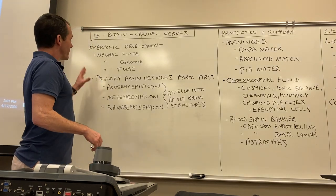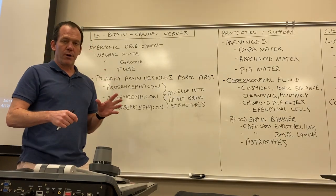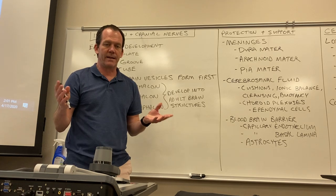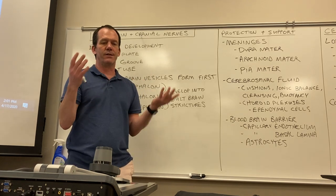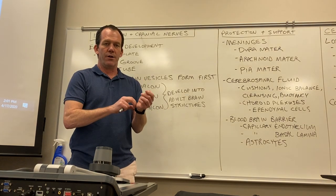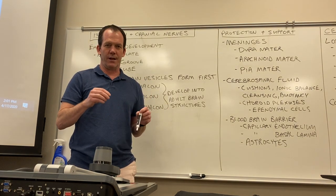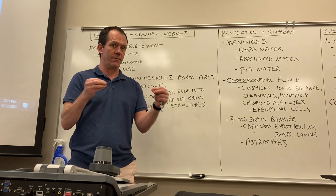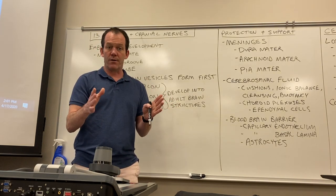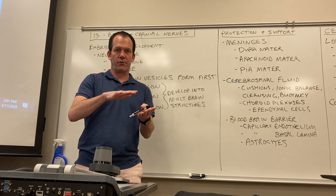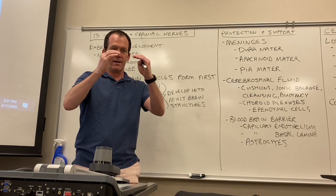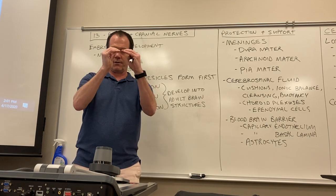When you were a little embryo, you were just a little patch of tissue — cells — and those cells began to differentiate, and eventually you went into a process called neurulation. Neurulation is the formation of the nervous system. The nervous system actually forms from ectoderm, the epithelial tissue, and it actually invaginates.